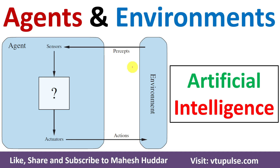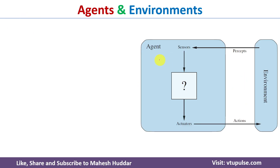Welcome back. In this video I will discuss agents and environments in artificial intelligence with the help of a simple example. There are mainly two components in artificial intelligence: the first one is agent and the second one is environment.